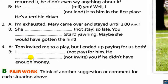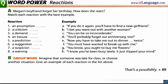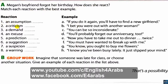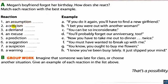Exercise number 10, Word Power: Reactions. Megan's boyfriend forgot her birthday. How does she react? Match each reaction with the best example. The words are: assumption, criticism, demand, excuse, prediction, suggestion, suspicion, warning. Number one — an assumption: F. 'You must have wanted to break up with me.' Number two — a criticism: C. 'You can be so inconsiderate.'